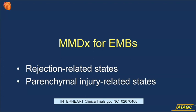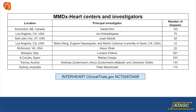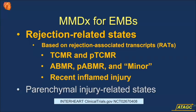Let's look at some hearts. We're looking at endomyocardial biopsies to assess rejection and injury states — we've now got over 2,000 biopsies. In hearts, we look at TCMR, possible TCMR, ABMR, possible ABMR, this new state we call minor, and we also identify recent inflamed injury. We see all these when we look at the rejection-associated transcripts, or RATs.